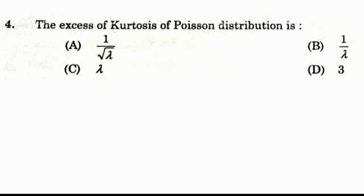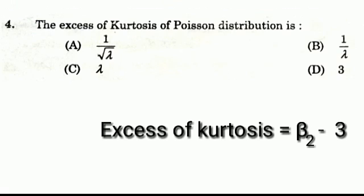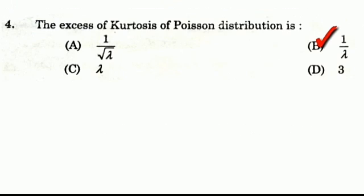Question 4: The excess kurtosis of the Poisson distribution — Options: A: 1/√λ, B: 1/λ, C: λ, D: 3. Excess kurtosis = β₂ − 3. Answer: 1/λ.